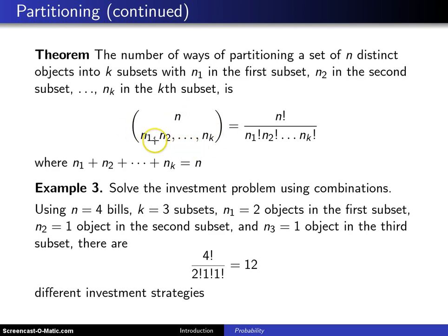It is n choose (n1, n2, ..., n_k), which equals n factorial divided by n1 factorial, n2 factorial, up to n_k factorial, where the sum of the n_i's equals n. Now if we use this theorem to solve the investment problem that we just finished by enumerating, it goes as follows.